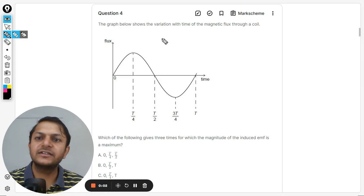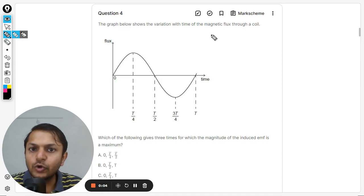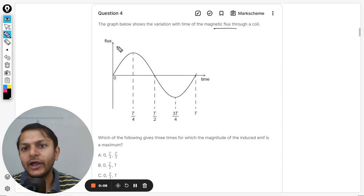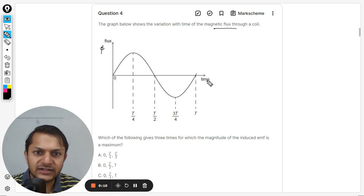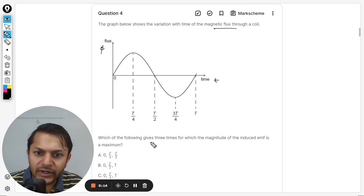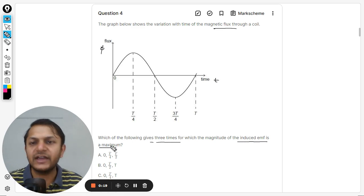Okay dear students, let us see what is there in this question. The graph below shows the variation with time of the magnetic flux through a coil. So this is basically a flux and the time here is on the x-axis, which is t.